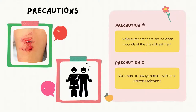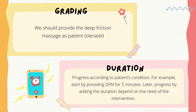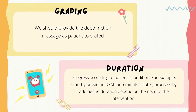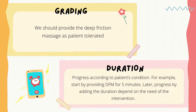There are also a few precautions. First, make sure that there are no open wounds at the site of treatment. Next, make sure to always remain within the patient's tolerance. For the grading, we should provide the deep friction massage as patient tolerated. For the duration, progress according to the patient's condition. For example, start by providing deep friction massage for 5 minutes, then progress by adding duration depending on the need of the intervention. If there is no presence of adhesion to the structure, we can discontinue the deep friction massage.